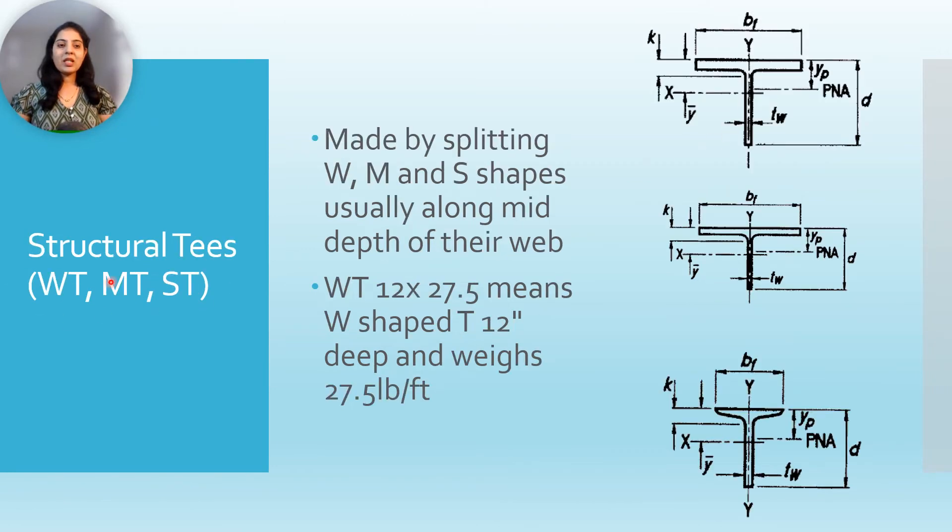Structural T is WT, MT, and ST. They are made by splitting W, M, and S shapes usually along mid depth of their web. So this is W shape I beam and it is cut at its mid depth and made as in WT shape. Similarly MT shape and ST shape. WT 12 by 27.5 means W shape T 12 inches deep and 27.5 pounds per feet weight.